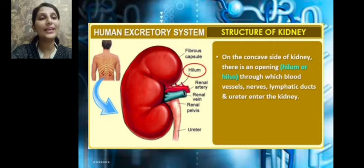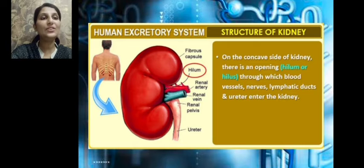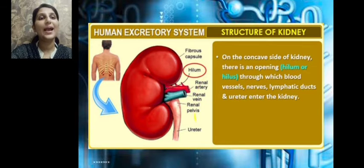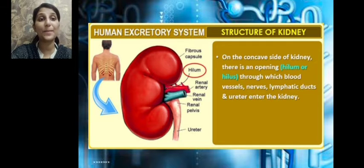On the concave side of the kidney there is an opening called the hilum. Through this opening, the blood vessels, nerves, lymphatic ducts, and ureter enter the kidney. We can see the renal artery and renal vein, as well as the lymphatic ducts, nerves, and a single ureter entering the kidney.